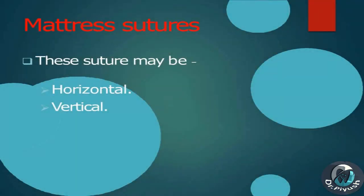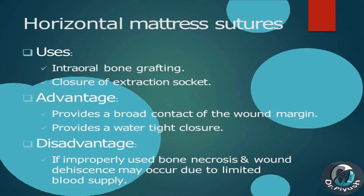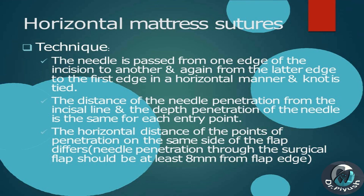Mattress sutures may be horizontal or vertical. Horizontal mattress sutures — Uses: intraoral bone grafting, closure of extraction socket. Advantages: provides broad contact of the wound margin, provides a watertight closure. Disadvantages: if improperly used, bone necrosis and wound dehiscence may occur due to limited blood supply. Technique: the needle is passed from one edge of the incision to another and again from the latter edge back to the first edge in a horizontal manner, and a knot is tied.